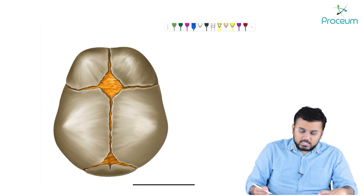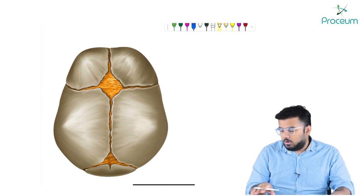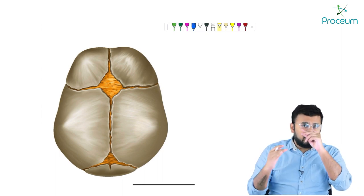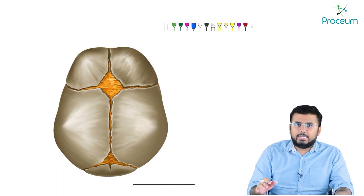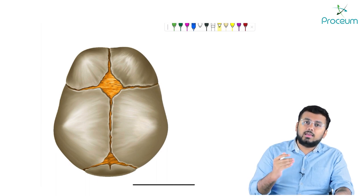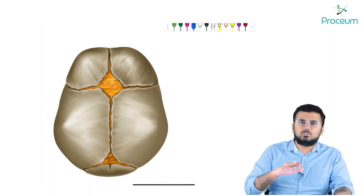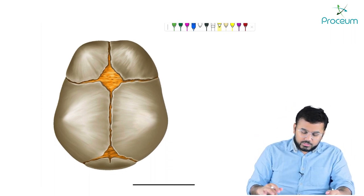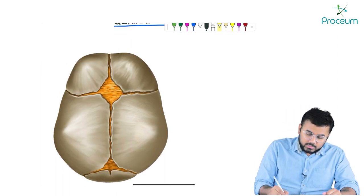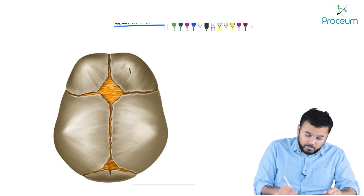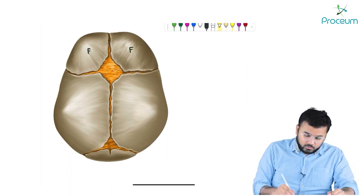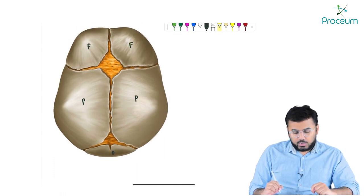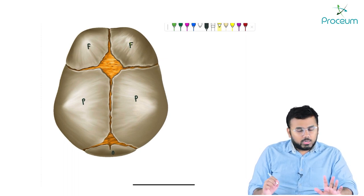Before discussing craniosynostosis further, let us discuss the normal anatomy of the skull and the sutures. We shall then enter into the topic and discuss each pathology, and at the end I will discuss the pathophysiology of why this is all happening - because if I discuss pathophysiology now, you won't understand it.